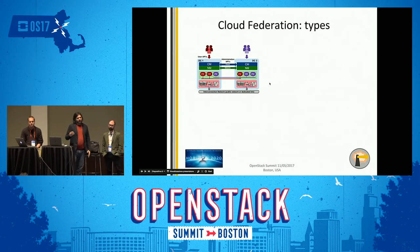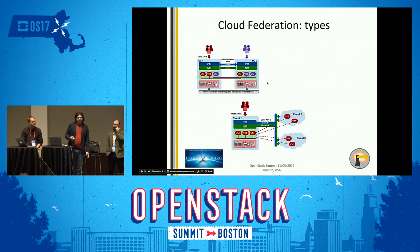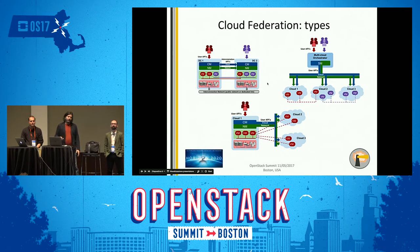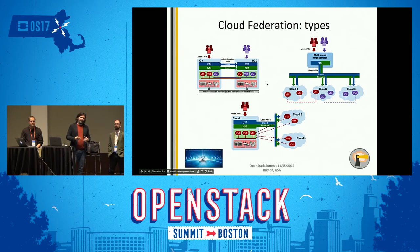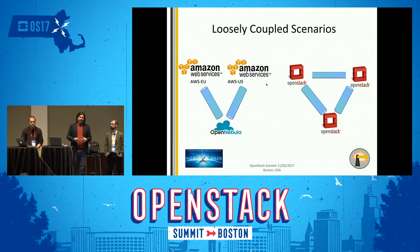We identified three cloud federation types. First, the peered federation, where cloud peers interact through administration APIs. Second, a hybrid scheme where a cloud interacts with other clouds via user APIs. Third, the brokered federation, where an external entity — a multi-cloud orchestrator — interacts with all the clouds. In this project we have covered the second and third options in particular.